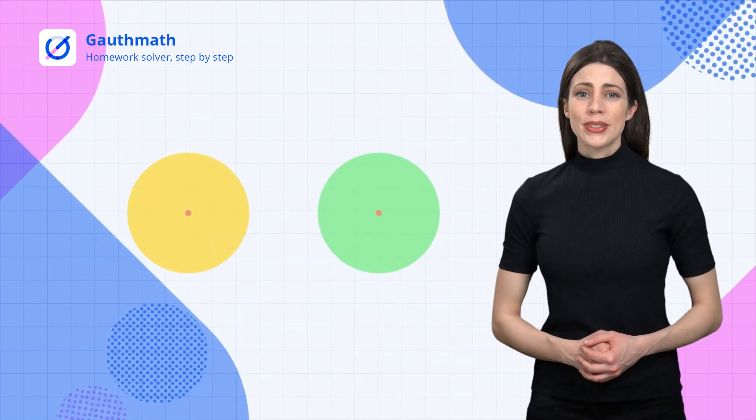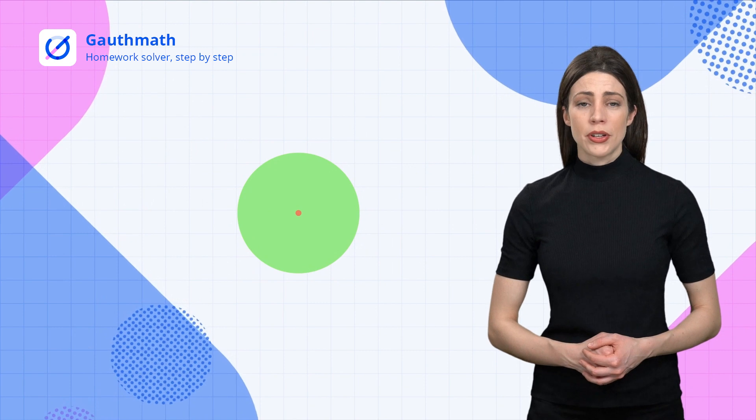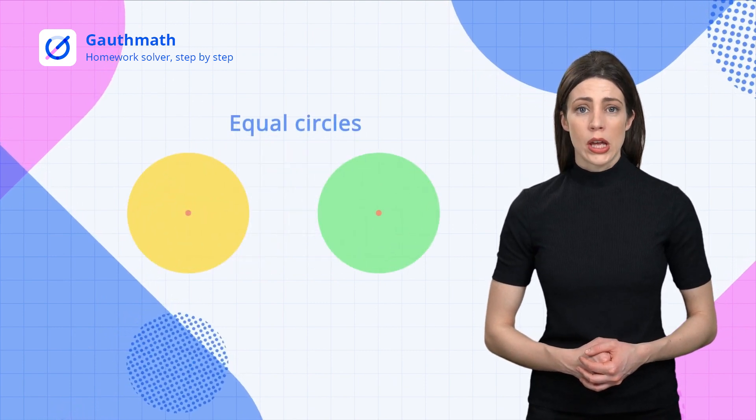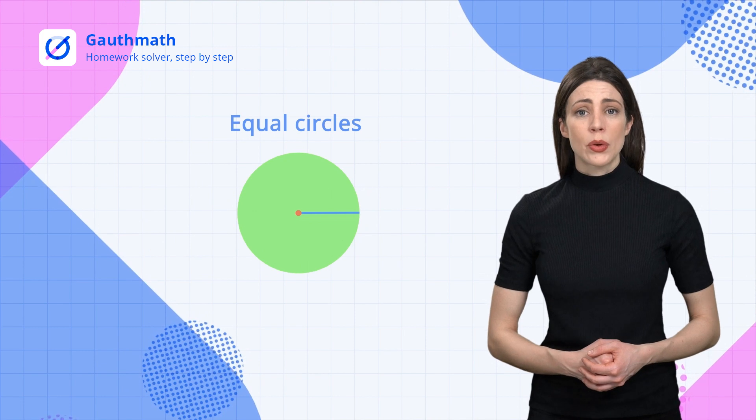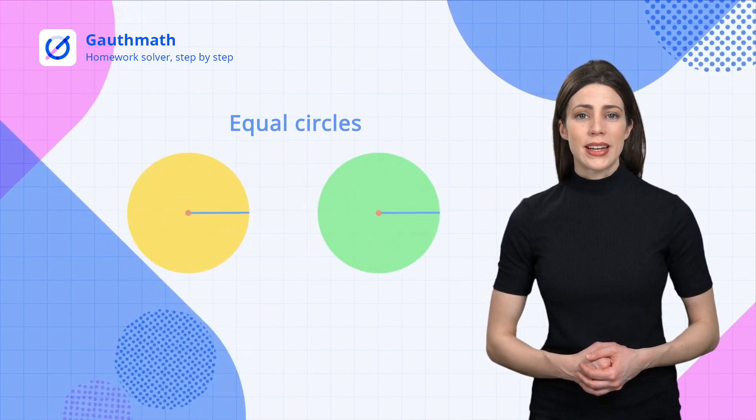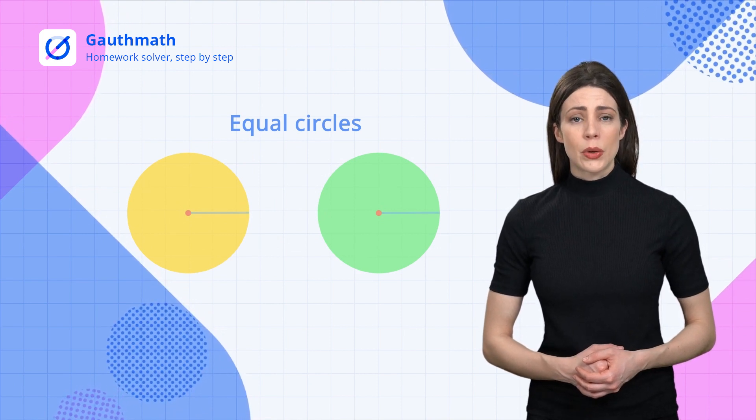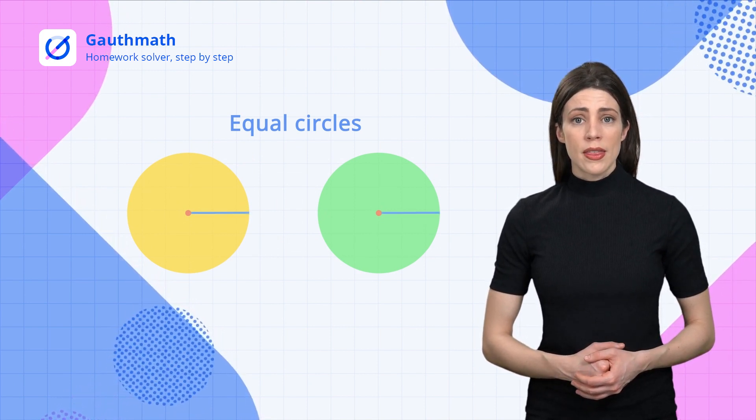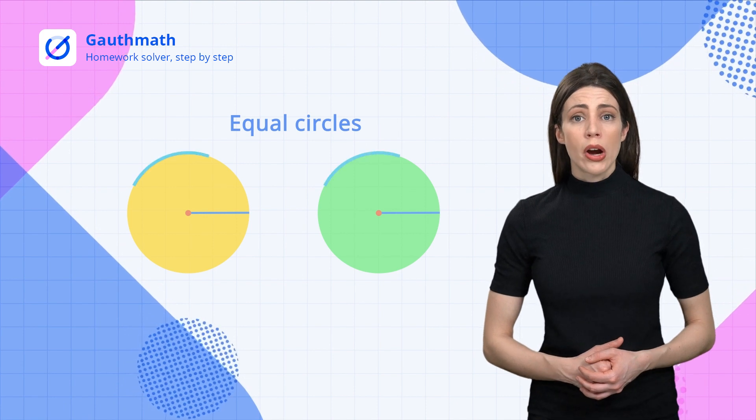Two circles that can be completely overlapped are called equal circles, which is to say two circles that have equivalent radii are equal circles. Vice versa, equal circles have equal radii. Within the same circle or equal circles, two arcs that coincide are called equal arcs.